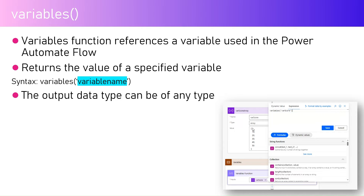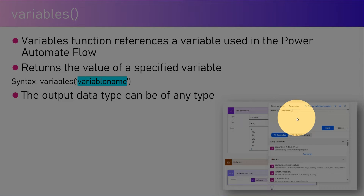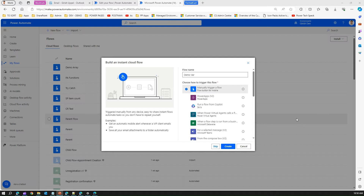Here is an example: var score is an array with numeric elements. The name of the variable is var score. To reference it, you can use a compose action, then under variables in single quotes call the name of that variable — var score — placed inside the bracket.